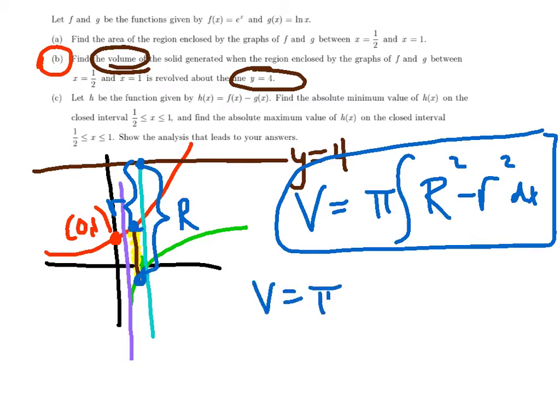So volume equals π. My bounds are going to remain the same, 1/2 to 1. And now very carefully, big R, you're always saying upper minus lower. So my upper end is on 4. My lower end is on the green ln(x). 4 minus ln(x) squared. So that's big R.